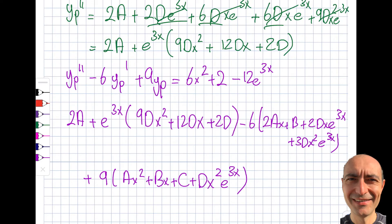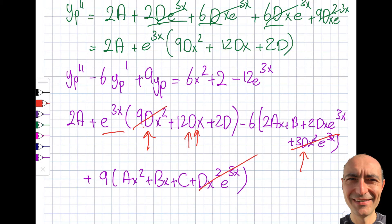Looking at the e^(3x) terms: for x², I have 9d minus 18d plus 9d — that's plus 9 minus 18 plus 9, which cancels to zero. And it should, because there's no x²·e^(3x) on the right-hand side. For the x terms I similarly get 12dx minus 12dx — those cancel too. If you don't get zero here, you've made a mistake somewhere.